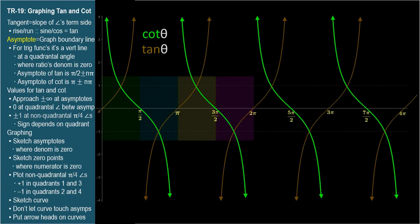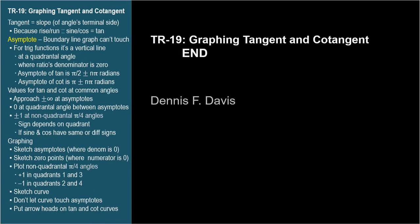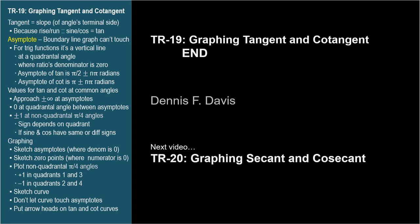The period for both tangent and cotangent is pi radians. They repeat themselves twice as often as sine and cosine, because in quadrants three and four, they repeat exactly the pattern from quadrants one and two. You should be able to sketch nice graphs of these functions with asymptotes clearly marked, as well as the points where the functions are zero, one, and negative one. Include arrowheads and don't touch the asymptotes. The unit circle makes this all very easy. In the next video, TR-20 will graph the last two trig functions, secant and cosecant.